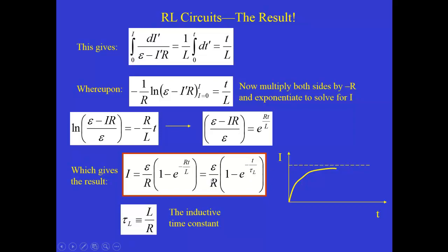Right, because over here we had R over L. So if we divide the top and the bottom by R, we get a quantity in the denominator that's L over R. So that's the inductive time constant.